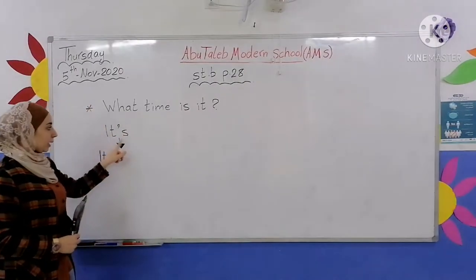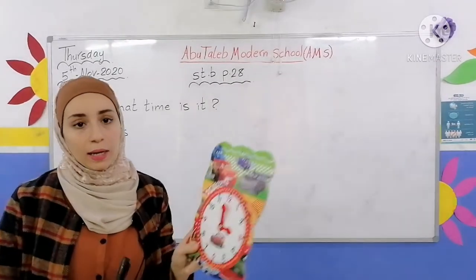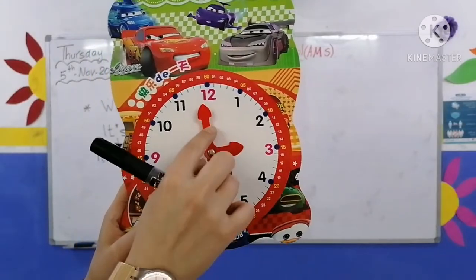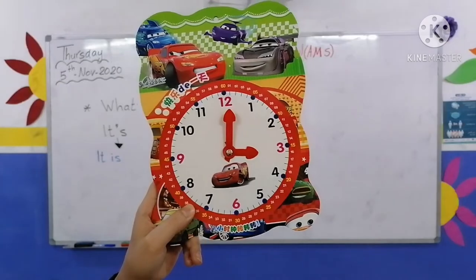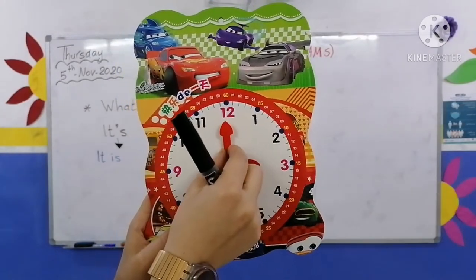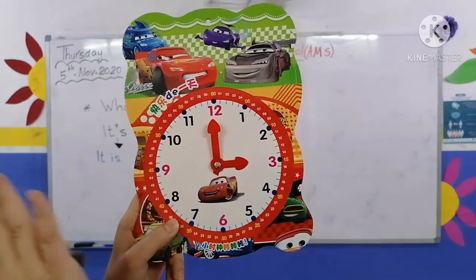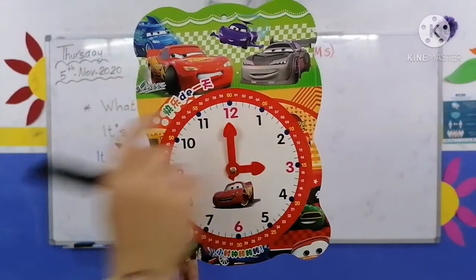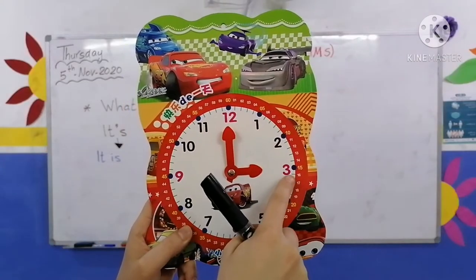Look here — we have a small hand and a big hand on the clock. It's three o'clock. When the big hand is on twelve, we say 'o'clock', which means تماما (exactly). So: It's three o'clock. Repeat after me: What time is it? It's three o'clock.